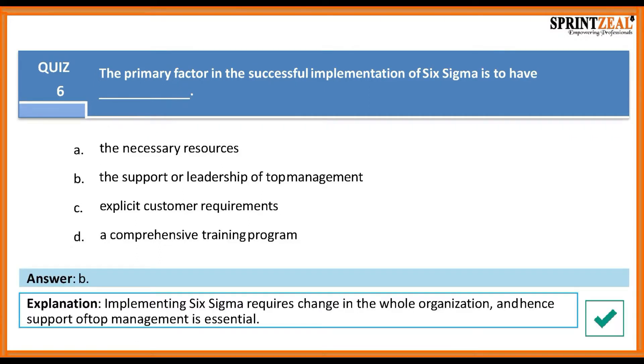The answer is B. Implementing Six Sigma requires change in the whole organization, and hence support of both top management and leadership is essential.